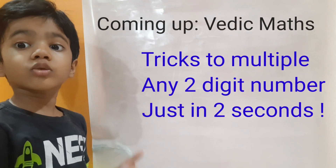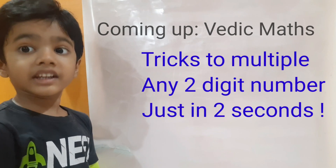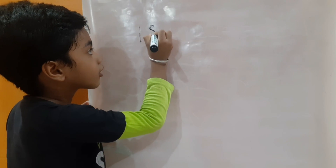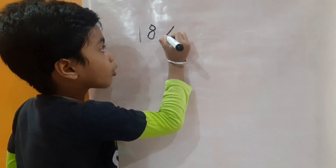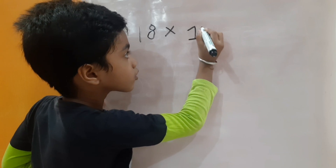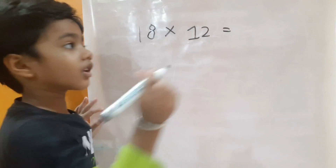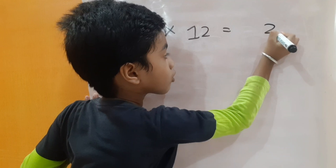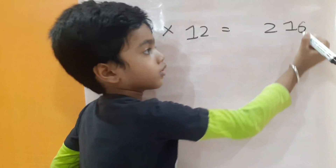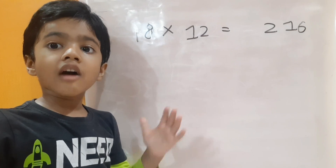In my next video, I will tell you how to multiply a two-digit number in two seconds. Let's take a demo: 18 into 12 equals to how much? 216. Surprise! In my next video, I will tell you how I did it.